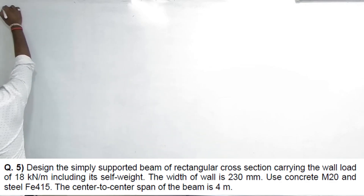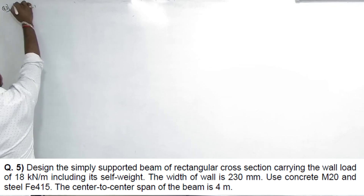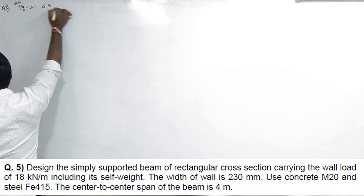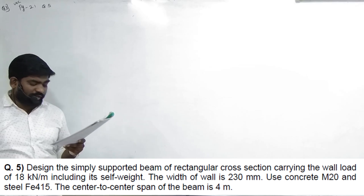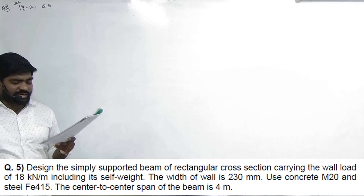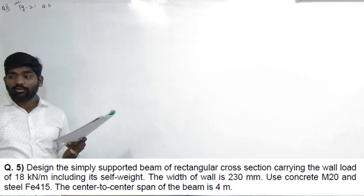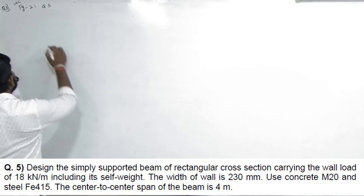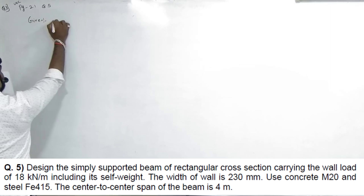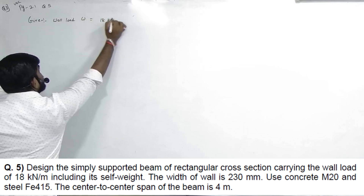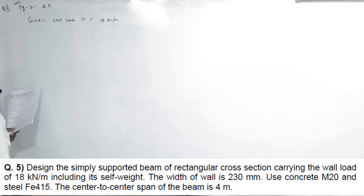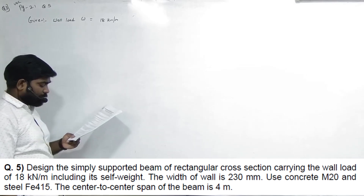Question number 5 — interesting numerical, this will be our question 3, page number 21. Design a simply supported beam — rectangular beam cross section carrying a wall load of 18 kN per meter including self-weight.